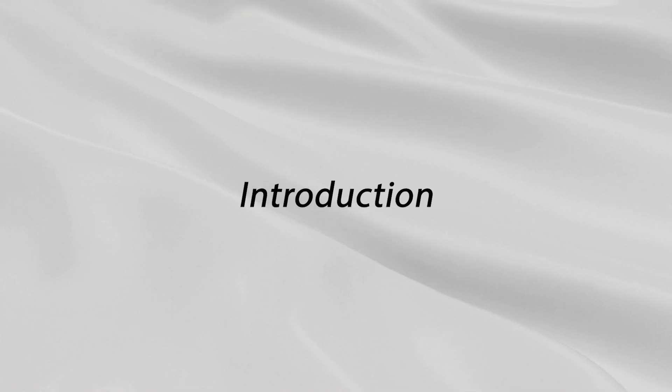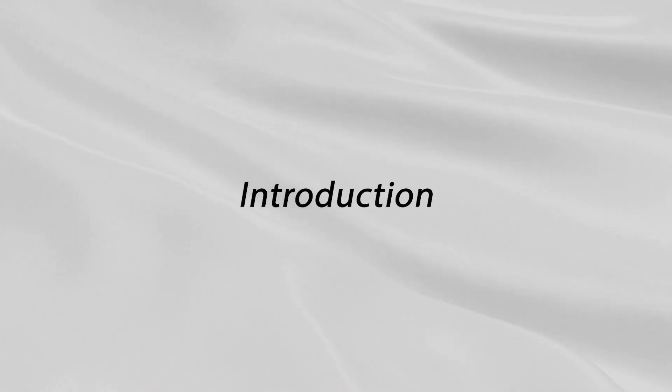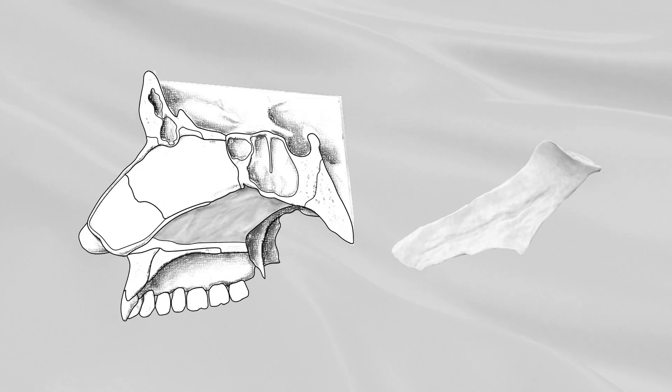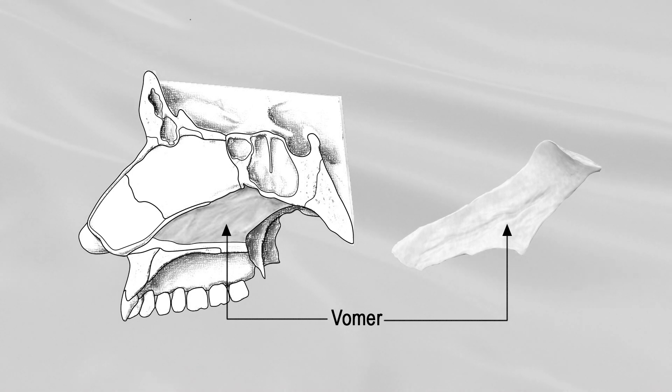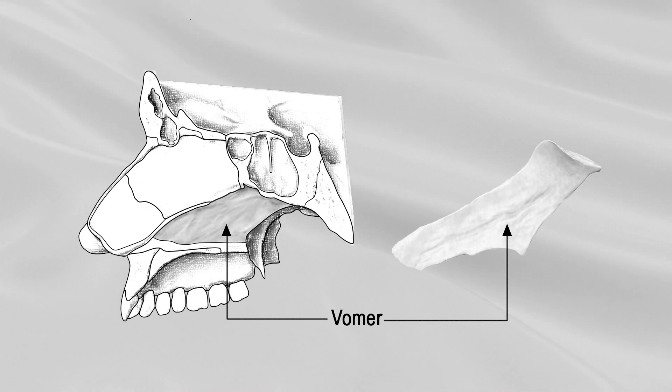VOMER. VOMER is a single, thin, flat bone forming the posteroinferior part of the nasal septum.